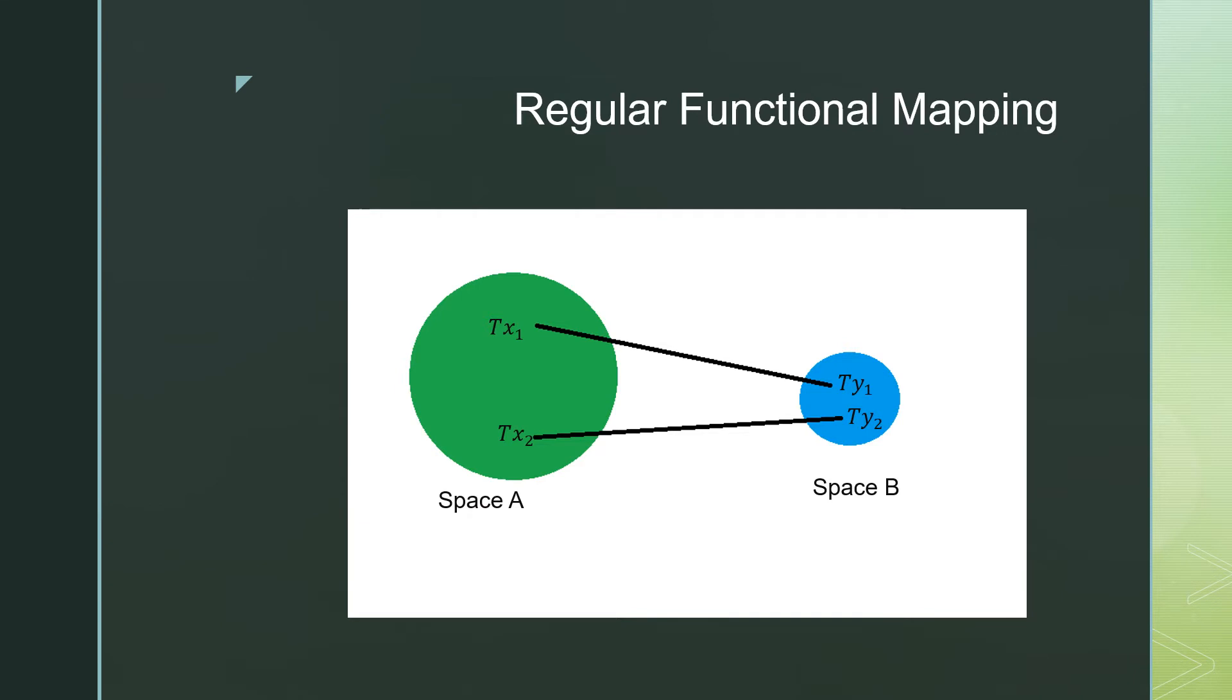So let's talk about actually visualizing regular functional mapping. If T was a regular function, we'd be taking variables from space X and mapping it to space Y, or from space A to space B, just going in one direction one way to the next.